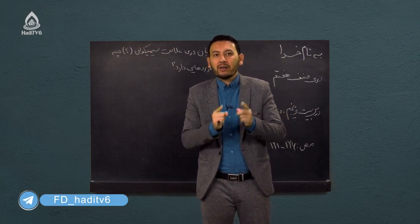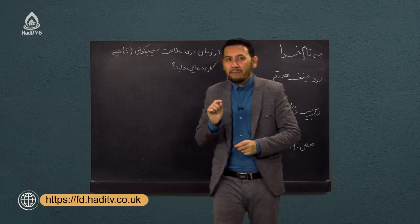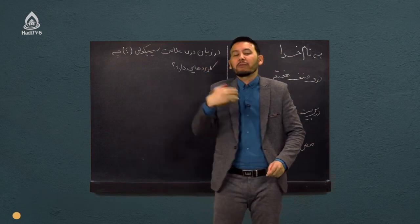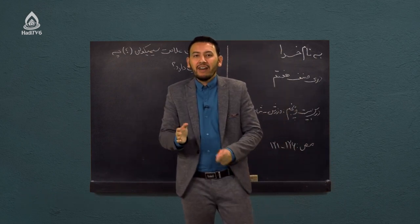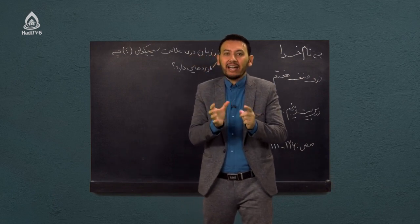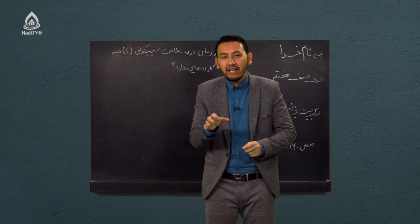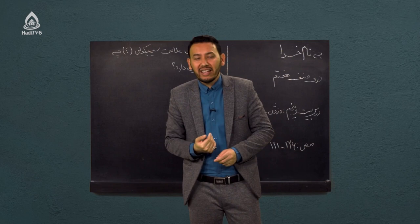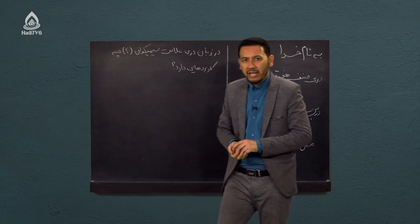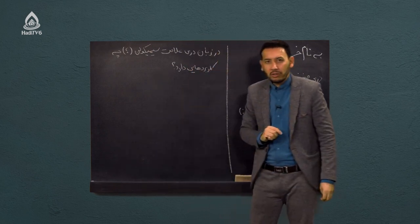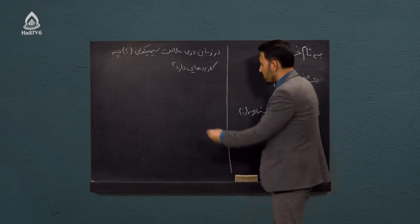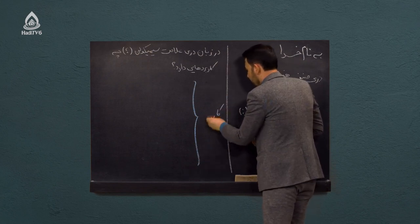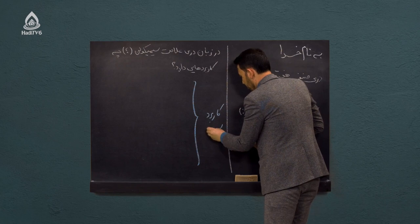که نشان می دهد که در واقع ترکیبی ما بین این دو تاست. سیمی کلن یعنی چی؟ در تعریف سیمی کلن، او نشانه ای است، علامتی است که یک مکث است، یک توقف است، یک درنگ است. با این تفاوت که این مکث باید از کامه یا ویرگول کمی طولانی تر باشد ولی از نقطه کوتاه تر باشد. یعنی کوتاه تر از نقطه و بلندتر از ویرگول.